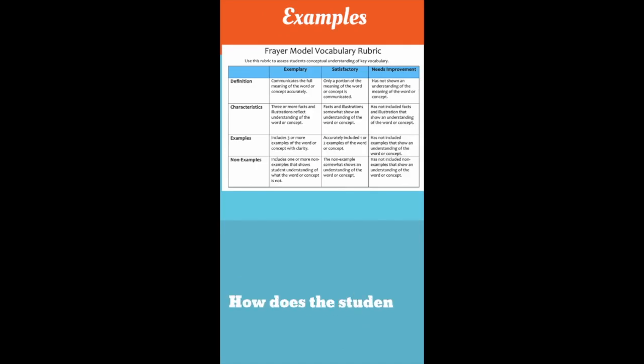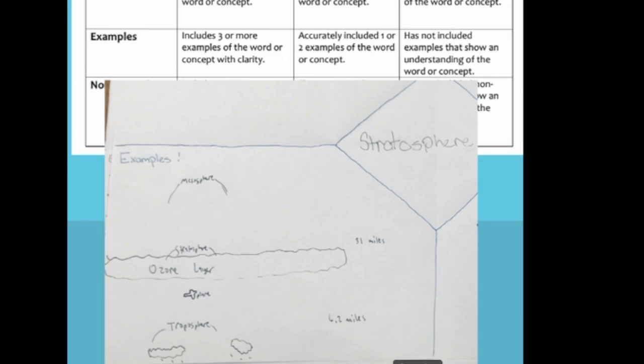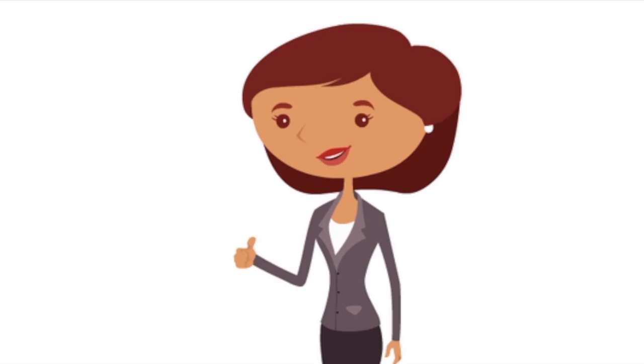How does the student's work measure up compared to the rubric? While there aren't actually three or more examples, does the drawing show that the student understands the concept with clarity? We'd say yes.